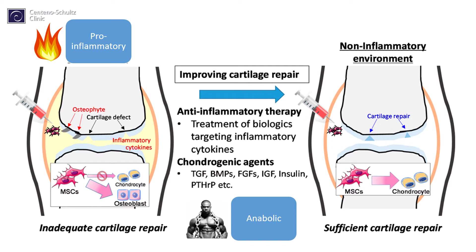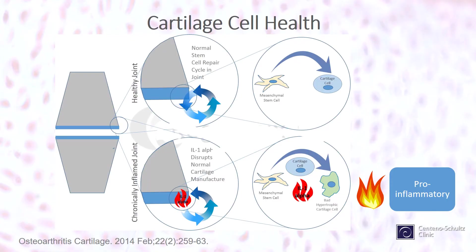One of the problems we see is when there's a lot of inflammation, we can get bad cartilage. But when we add growth factors — things like TGF-beta, FGF, IGF, and insulin — those can help to repair. To delve deeper into cartilage cell health, if we've got chronic inflammation in a joint, that can lead to bad cartilage cells.